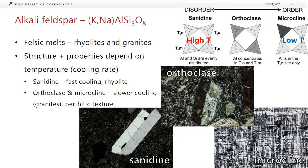Alkali feldspar is basically only found in felsic melts — rhyolites, granites — and you can also find it in dacites, with the intrusive equivalent being granodiorite. The structure and properties depend on temperature, and whether we lock in the high-temperature form or the low-temperature form depends on the cooling rate. If it's very fast cooling, as in a volcanic rock, then the high-temperature form — sanidine — gets frozen in. If it cools more slowly, say in a granite, the structure can keep reorganizing as the temperature drops to make either orthoclase or microcline. They look quite different in thin section, but the chemistry is more or less the same.